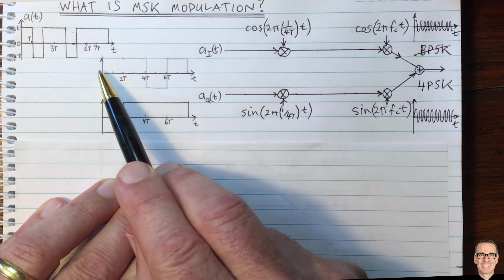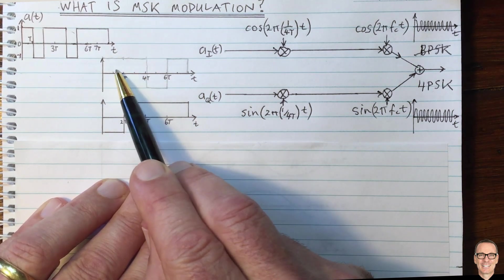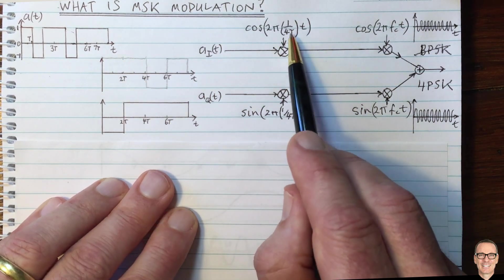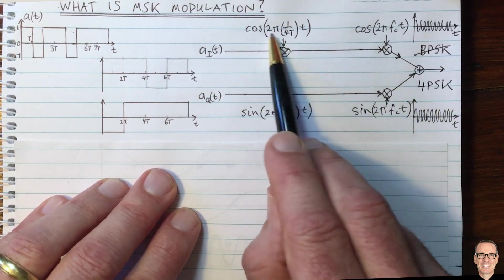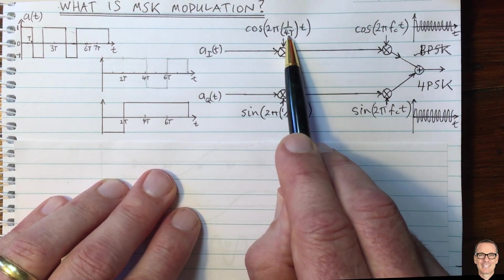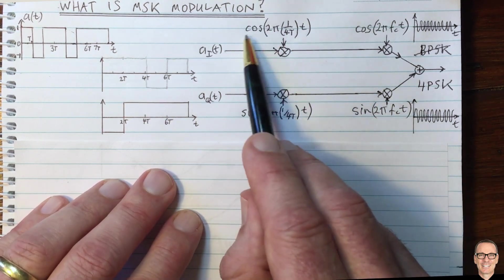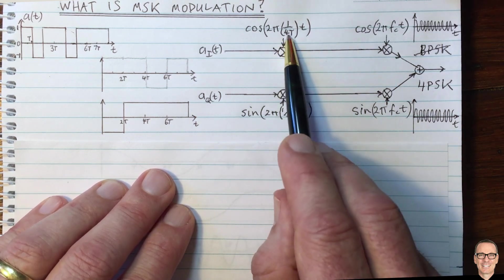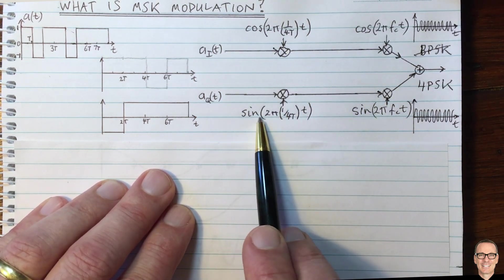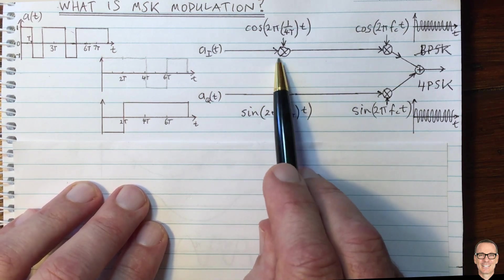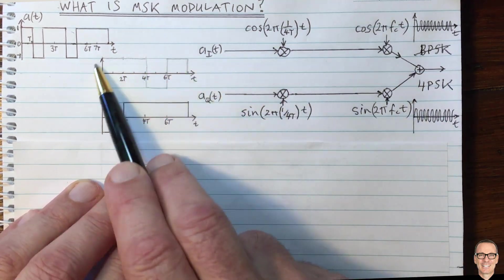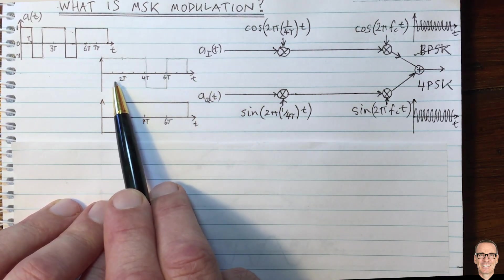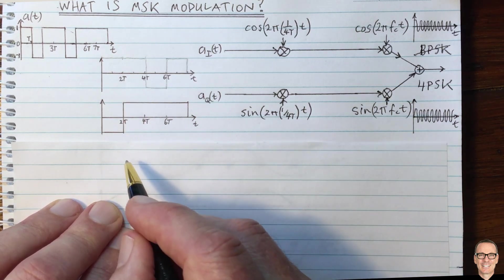This new waveform is at a very low frequency compared to the carrier — actually even lower than the data rate. Since we're putting data in every 2T, the data rate is 1/(2T), and the frequency of this extra low-frequency carrier is half of that: 1/(4T). We can think of this as pulse shaping. One multiplier is cosine and the other is sine. The second difference from 4PSK is that the in-phase data sequence is shifted back by T.